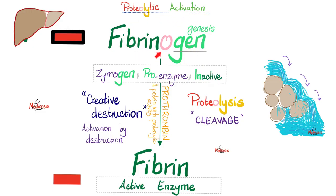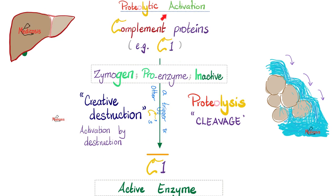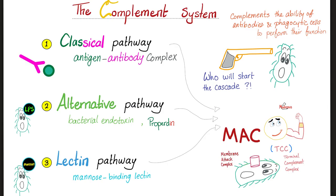Do you remember fibrinogen? It was inactive. It gets activated into fibrin by an enzyme — thrombin — through proteolysis: cleavage activates the protein. Fibrinogen is a bigger protein than fibrin; when the excessive pieces are broken down, you get clean active fibrin. By the same token, complement gets activated by proteolysis. Here is C1 — complement protein number one — inactive, a zymogen, a proenzyme. Then it gets activated into C1-active, which is an actual active enzyme.